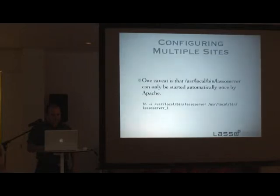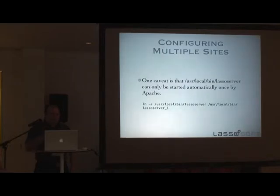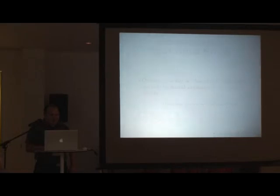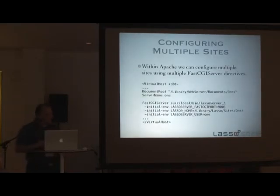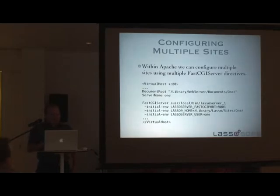Just a quick note — this is something we need to work on. The way Apache is configured right now in our config file, it can only launch LASSO server once. So just for the purposes of this example, I've created an alias to it, and we need to play around with the configuration. But this is basically how configuring LASSO 9 should work. Within Apache, we want to launch LASSO 9 multiple times.